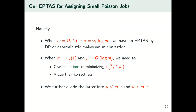Summarizing: for m constant or mu omega of log m, we already have an efficient PTAS by either dynamic programming or deterministic load balancing. For the remaining case where m is omega of 1 and mu is order of log m, we need reductions to minimizing a sum of some function f of the loads. We further divide this case into two regimes: mu less than m to the minus epsilon, or mu larger than m to the minus epsilon — our split point is chosen to be an inverse polynomial in m.